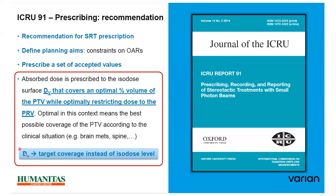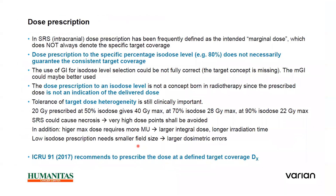An important point: ICRU Report 91 is recommending the use of target coverage instead of isodose lip. Historically, prescription has been frequently defined as an intended marginal dose, which does not always denote specific target coverage. Prescribing dose to a specific percentage isodose level — e.g., 80% — does not necessarily guarantee consistent target coverage. The use of gradient index for isodose level selection could be not fully correct since the target concept is missing. The modified gradient index could be better used. Dose prescription to an isodose level is not a robust concept in radiotherapy since the prescribed dose is not an indication of the delivered dose, and tolerance of target dose heterogeneity remains clinically important.